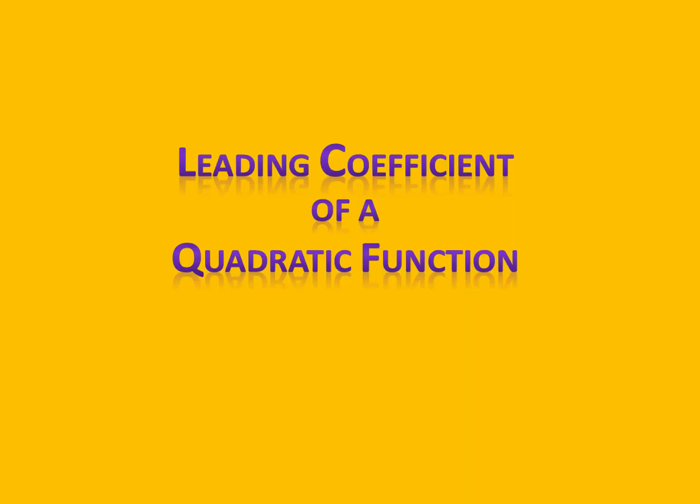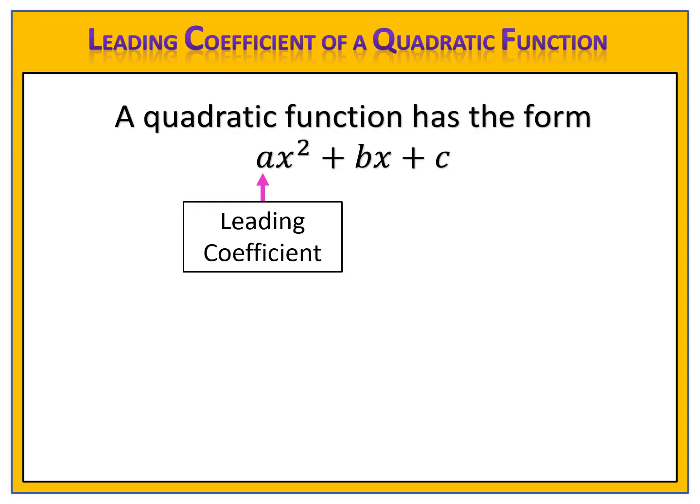In this lesson, we're going to learn about the leading coefficient of a quadratic function and see how it impacts the graph. Let's begin by reminding ourselves of what a leading coefficient is. We know that a quadratic function has the form ax squared plus bx plus c, where a, b, and c are numbers. The number in front of the x squared, the a, is called the leading coefficient. The leading coefficient can tell us a lot about the graph of the parabola. Let's take a look at some examples.